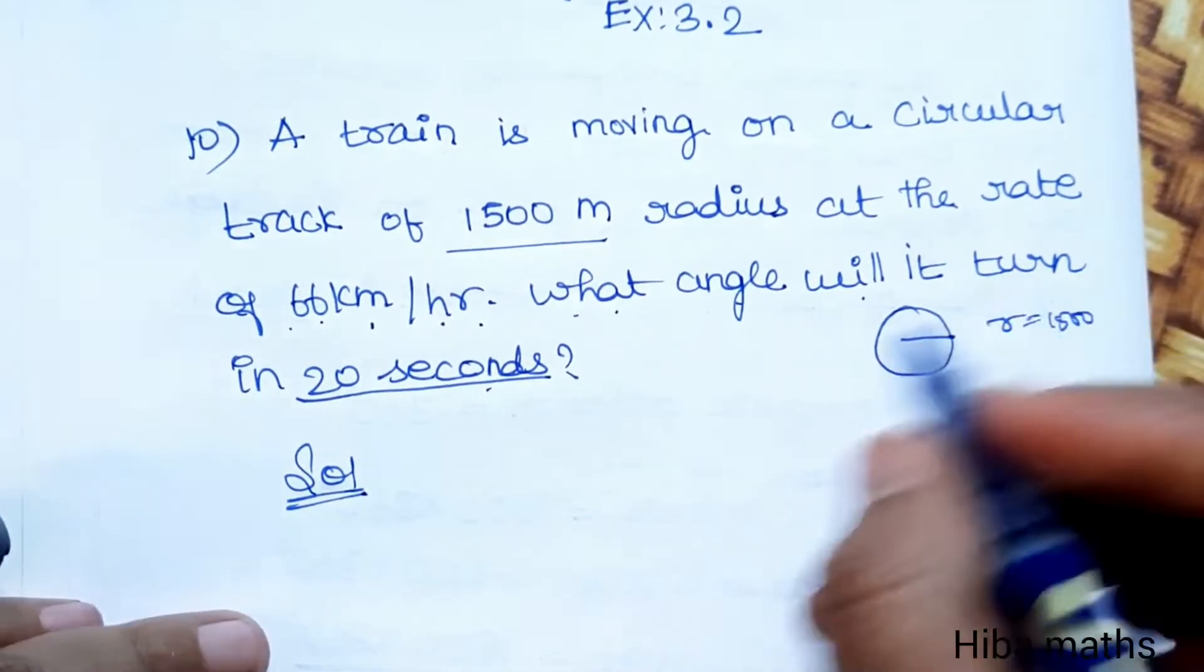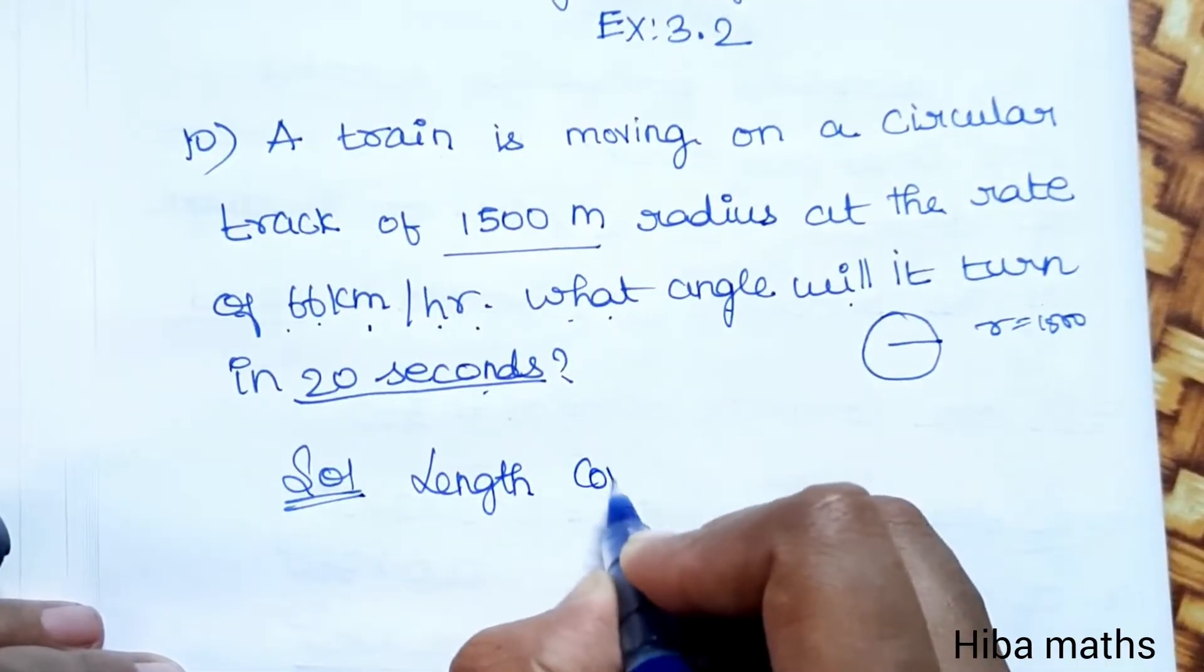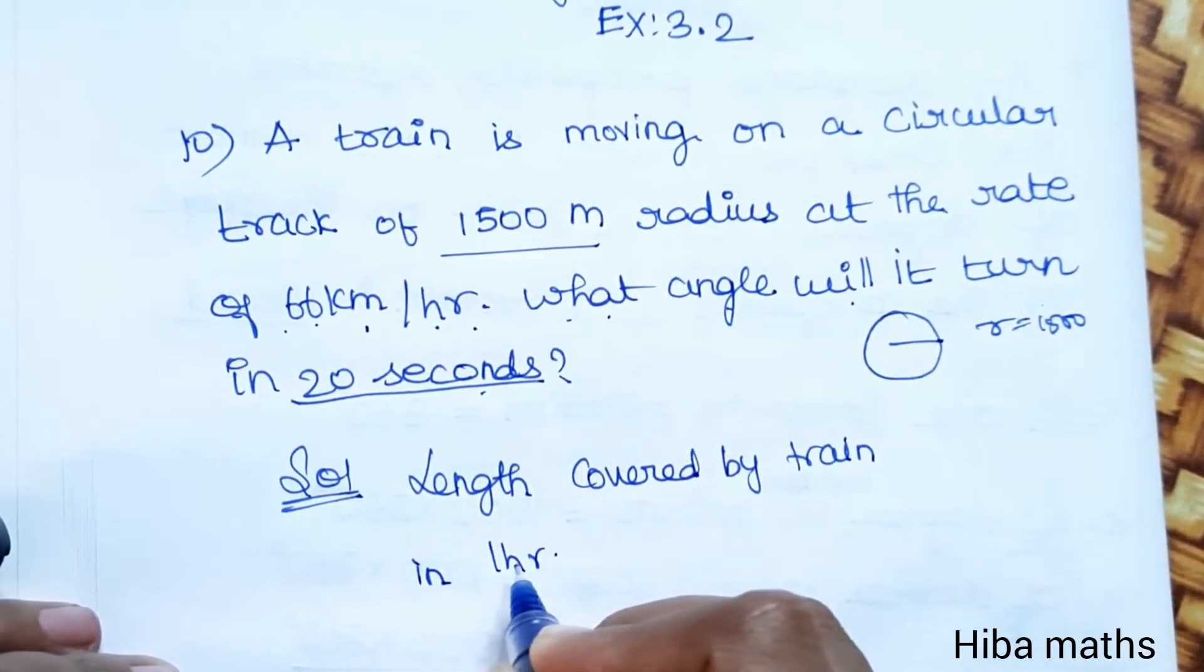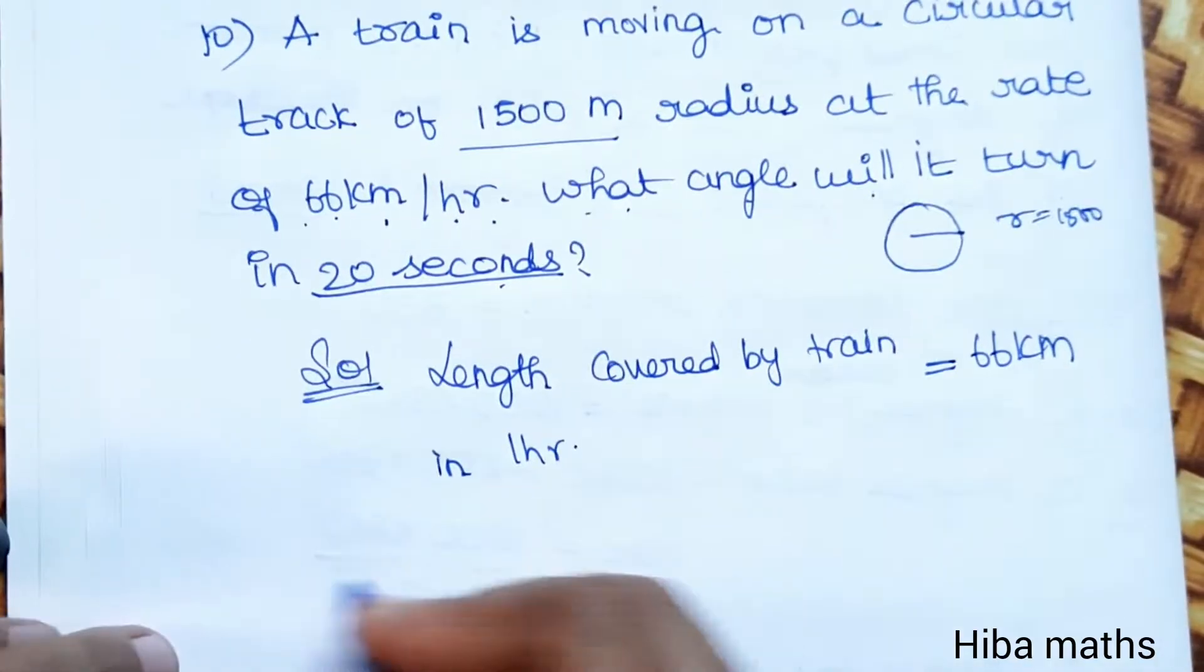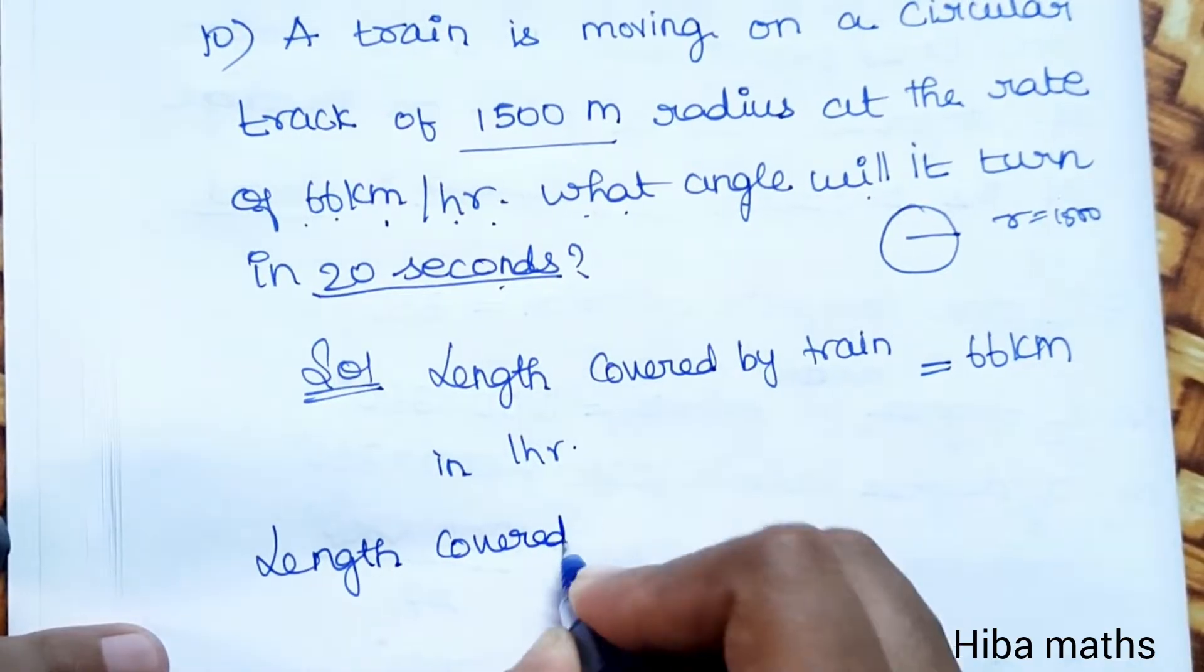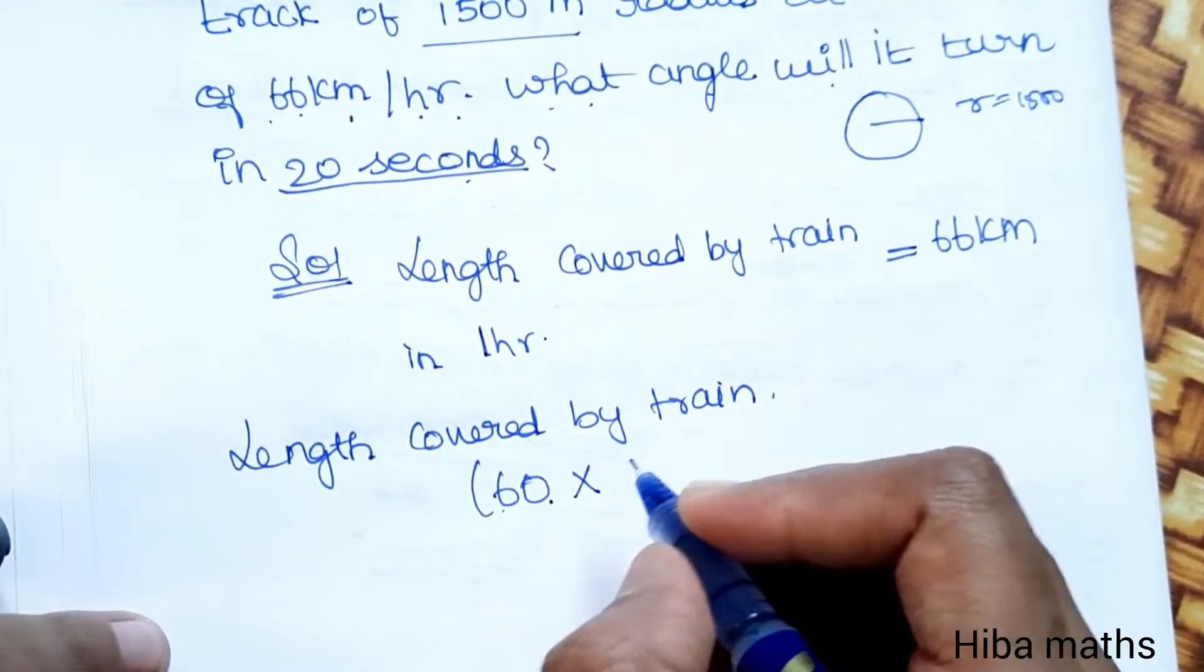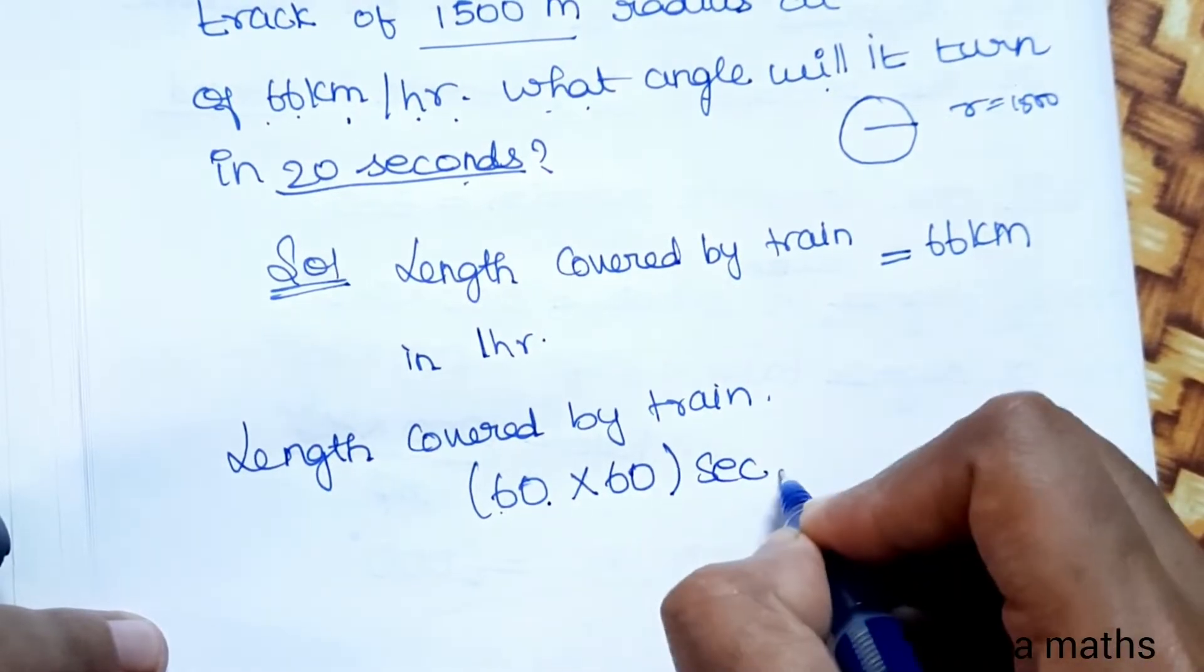First, we will find the length covered by train in 1 hour. In 1 hour, the train covers 66 km. Now, we need to convert to seconds. So 1 hour is equal to 60 minutes, and 1 minute is equal to 60 seconds.